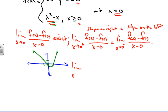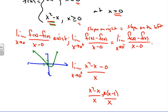For the right side, we use the limit as x approaches 0 from the right with the function x² - x. So we have [x² - x - f(0)] over x, which gives [x² - x] over x. We factor out x to get x(x - 1) over x, the x cancels, and we take the limit as x approaches 0 from the right, giving us negative 1. That's the slope approaching from the right.